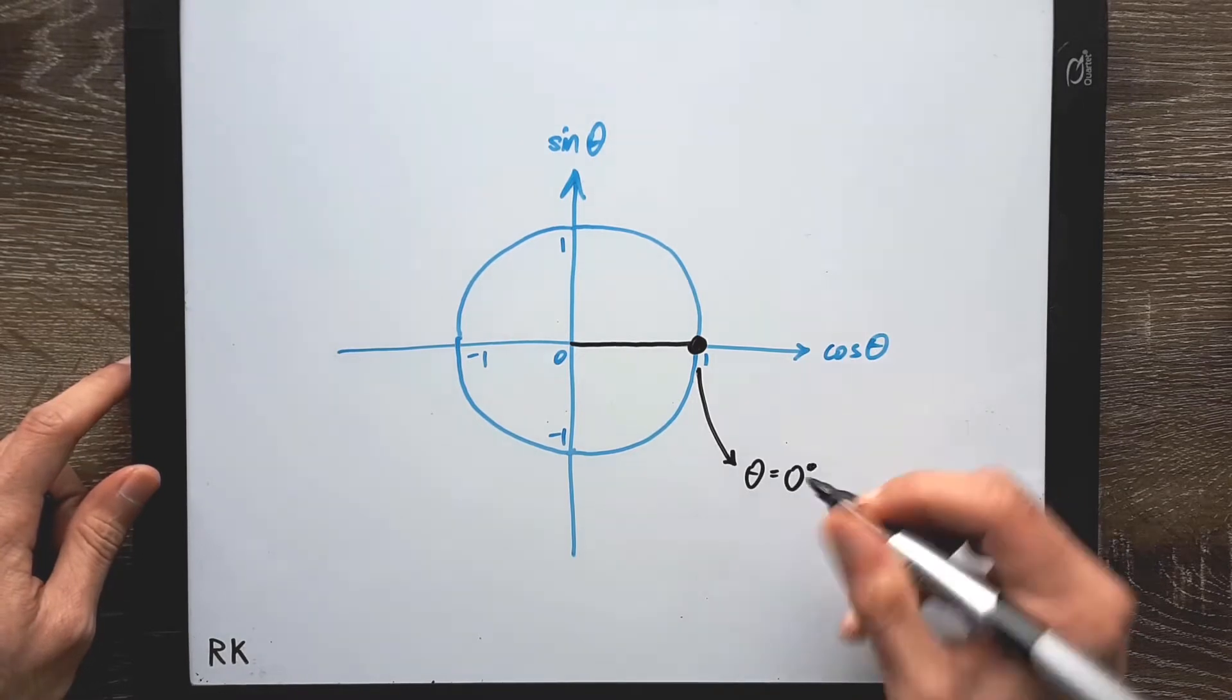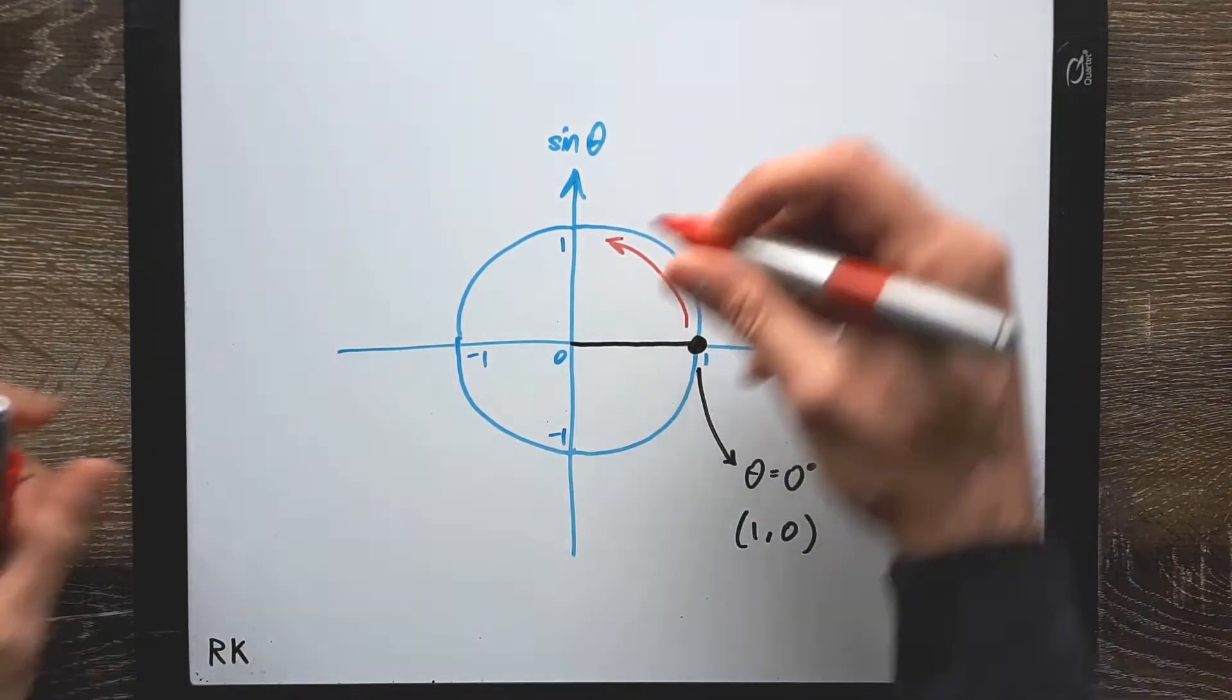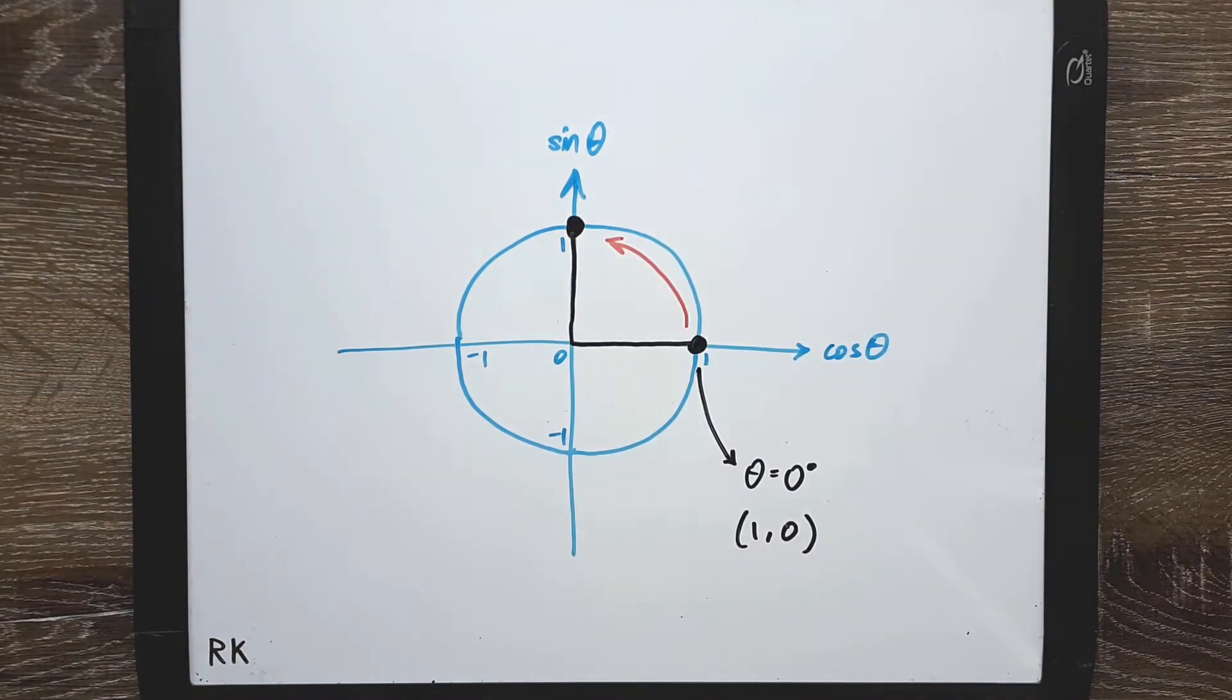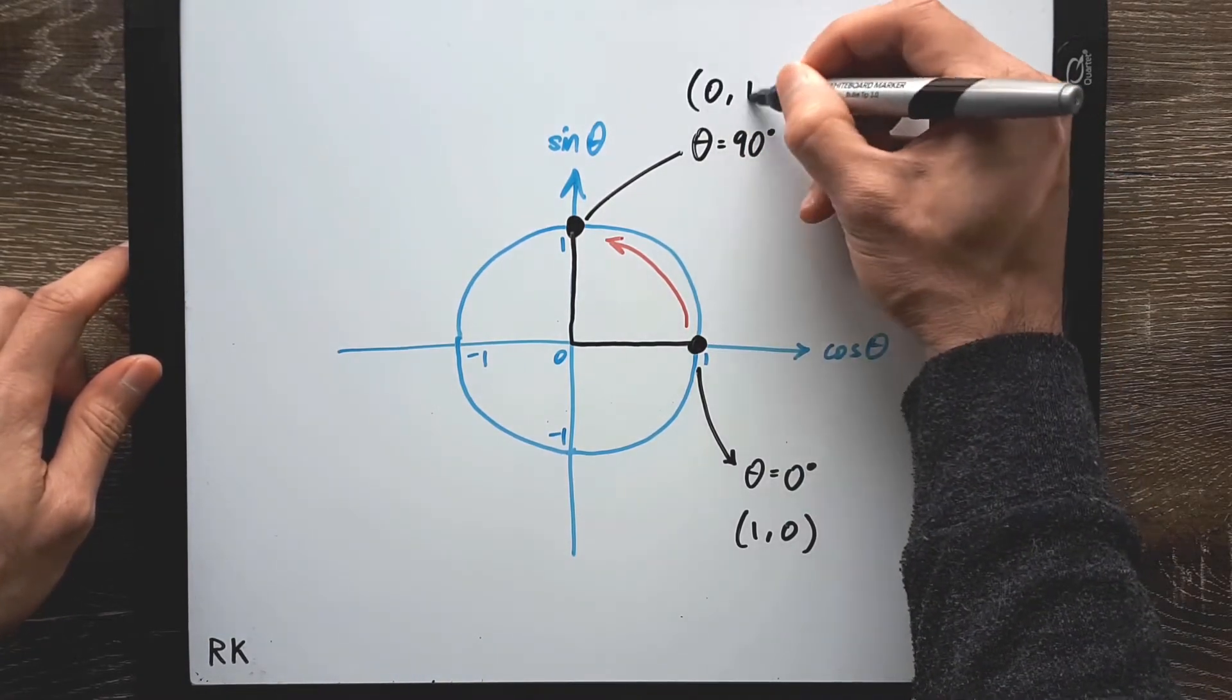At this point we have the coordinates 1, 0. If we rotate this point 90 degrees counterclockwise along the circle, we will land on the y-axis, establishing another quadrantal angle. So at 90 degrees we get the coordinates 0, 1.